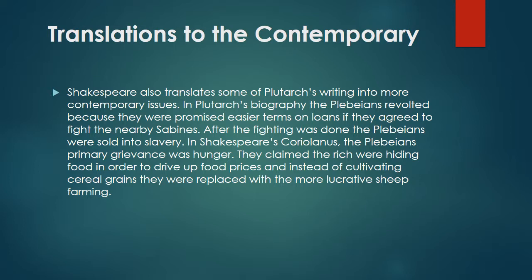Shakespeare also translates some of Plutarch's writings into more contemporary issues. In Plutarch's biography, the plebeians revolted because they were promised easier terms on loans if they agreed to fight the nearby Sabines, but after the fighting was done, the plebeians were sold into slavery. In Shakespeare's Coriolanus, the plebeians' primary grievance was hunger — they claimed the rich were hiding food to drive up prices, and that cereal grain farming was being replaced with more lucrative sheep farming. This manipulation of issues to make the play more relevant is a prime example of how culturally aware Shakespeare was, and how he had his finger on the pulse of Elizabethan society.